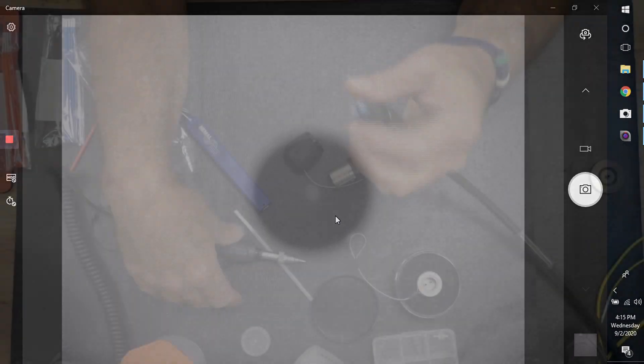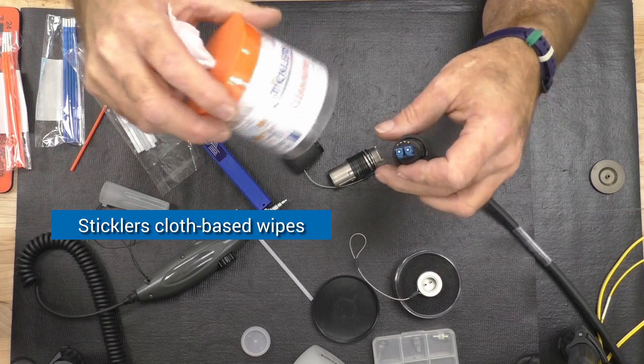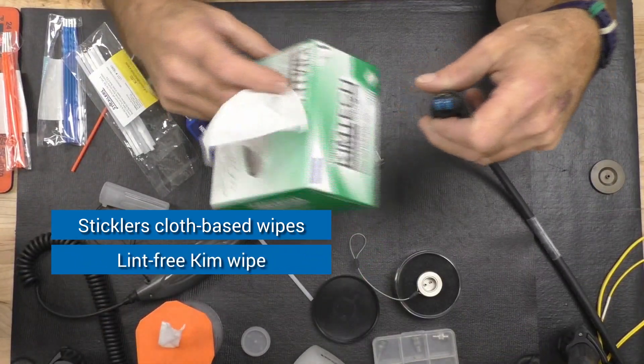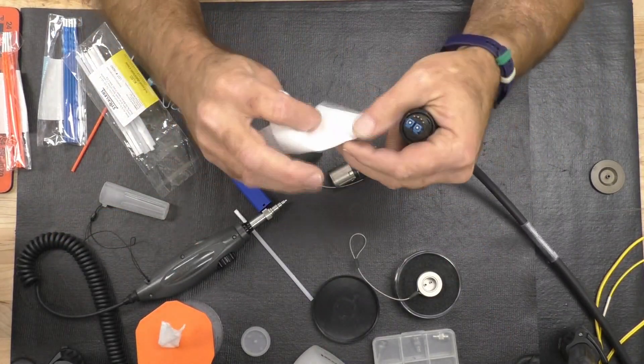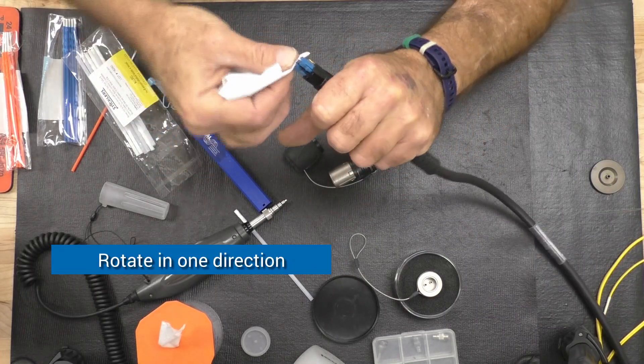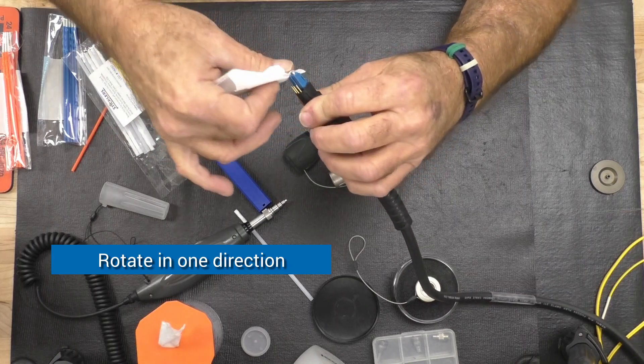Because you have access to both the contacts, you can even use wipes. These are cloth-based wipes, non-woven fabric. Something as simple as a chem wipe, which is basically a lead-free wipe. You can do it wet-dry, again rotating in one direction, to clean the surface of the contact.